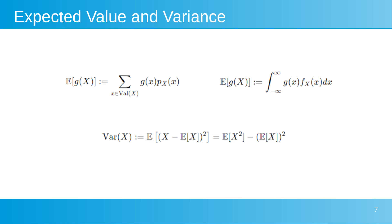The expected value, calculated differently for discrete and continuous random variables, represents the average outcome of a function g(X) over many realizations of X. For discrete variables, it is the sum of g(X) multiplied by the probability P(X=x), while for continuous variables, it is the integral of g(X) times the PDF f(x). Variance measures the spread of X around its mean and is calculated as the difference between the expected value of X squared and the square of the expected value of X.